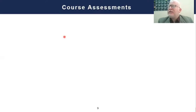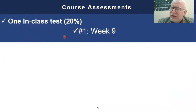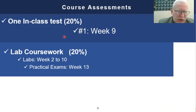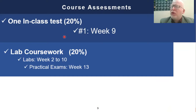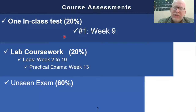About assessment, we have three types as usual. We have one in-class test, which should be scheduled in week nine. We have also a lab coursework worth 20% — I will focus on the labs in more detail in the next couple of slides. And then we have, of course, an unseen exam which weighs 60%. These are the three types of assessment.